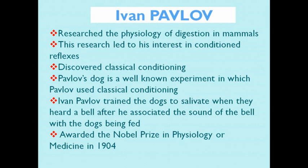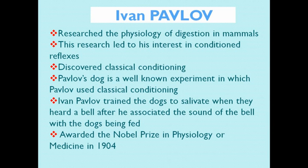Pavlov's dog is a well-known experiment in which Pavlov used classical conditioning. Ivan Pavlov trained the dogs to salivate when they heard a bell, after he associated the sound of the bell with the dogs being fed. He was awarded the Nobel Prize in physiology or medicine in 1904.